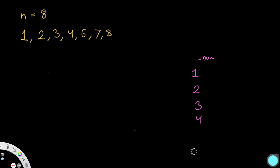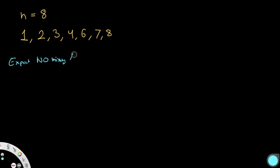Now let's move on to our second approach, which follows the idea of an arithmetic series. Let's say n is equal to 8 — assuming no missing numbers, we would have 1, 2, 3, 4, 5, 6, 7, 8. This is an arithmetic series since the difference between any two consecutive values is the same — in this case it's 1.